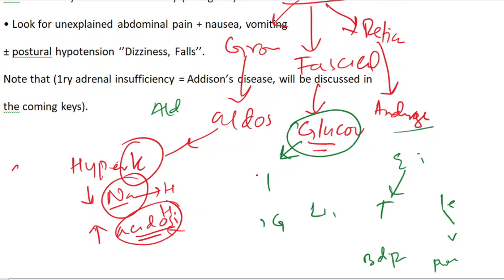When glucocorticoids are absent, gluconeogenesis does not occur, leading to hypoglycemia. Vasoconstriction roles are not maintained, so patients may develop orthostatic hypotension due to glucocorticoid deficiency, along with weakness and irritability.